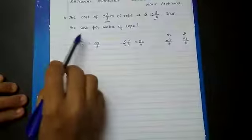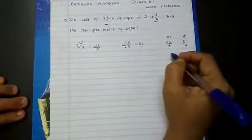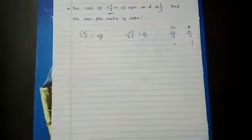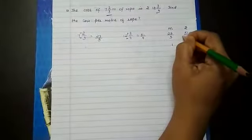Now they have asked find the cost per meter. Per meter means 1 meter. What is the cost? So now we will do the cross multiplication concept.